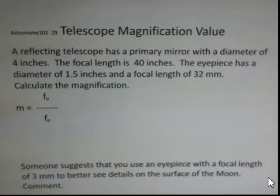In this video, we're going to calculate the magnification value for a telescope and make some comments about magnification. The primary purpose of a telescope is to gather light, and then after that, to magnify up to a certain point.